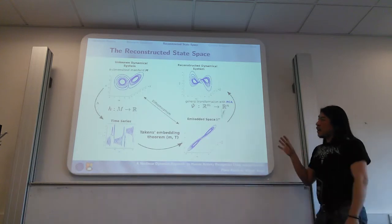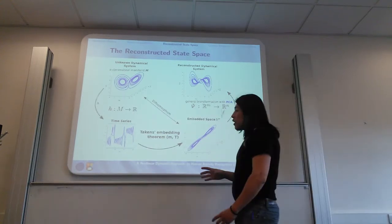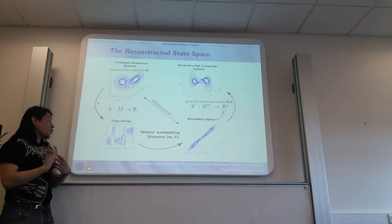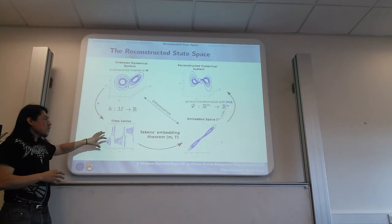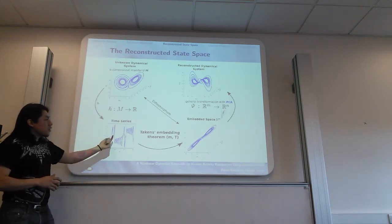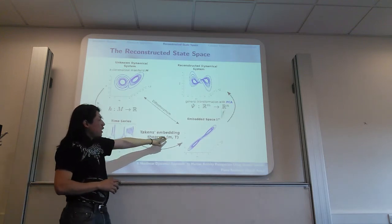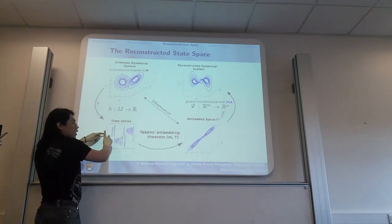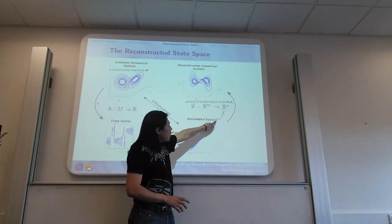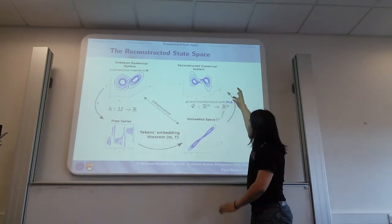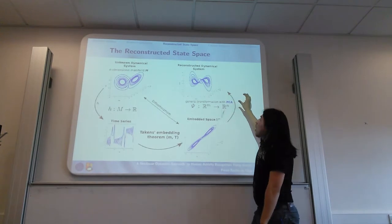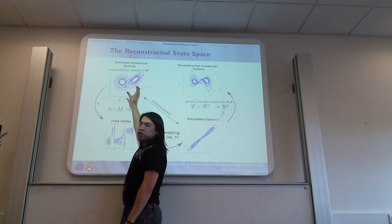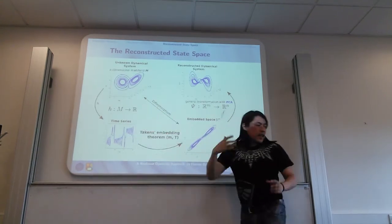Let me explain about the reconstructed state space. Basically what we have here is a time series that comes from the tools we are using. In our case we are using inertial sensors and we collect time series to apply the Takens theorem, which basically uses two parameters: m and tau. It's a transformation of a time series from one dimension, then we embed the space in m dimension, and we can reduce dimensionality by applying PCA. The idea is to reconstruct a similar dynamical system which is similar to the unknown dynamical system.